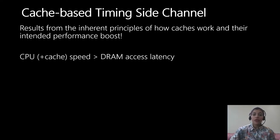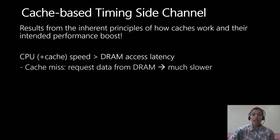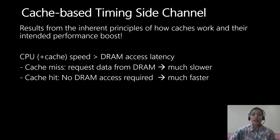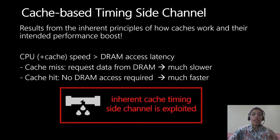Caches significantly boost the performance of modern processors because processors with closely coupled caches are much faster than DRAM accesses to main memory. When a piece of data is accessed for the first time, it needs to be fetched from DRAM into the cache after a cache miss. The next time this data is accessed, it hits cache, resulting in an orders-of-magnitude faster memory access. This difference in latency, directly observable by software, is the timing channel that can be exploited in caches because of their set-associative structure and mapping.